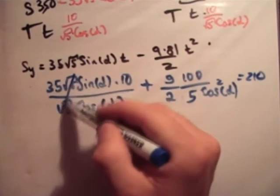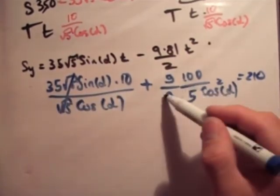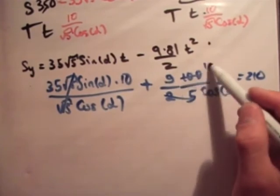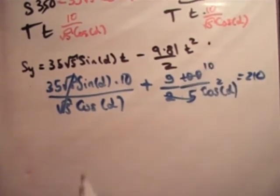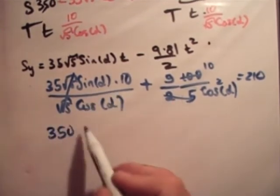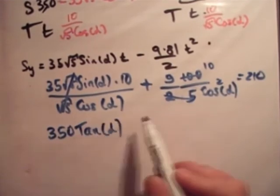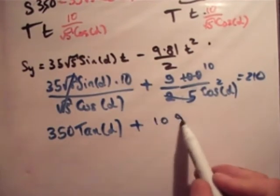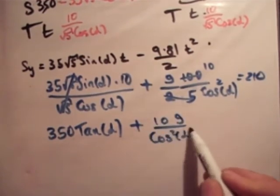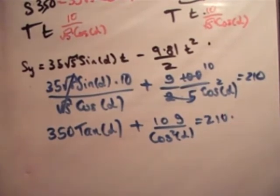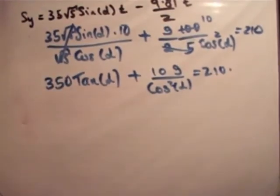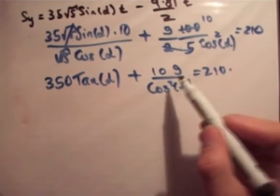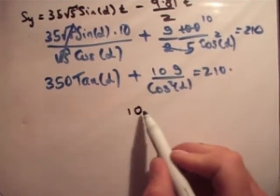So let's cancel what we can. 10 going into 100, 10 times. And you're left with 350·sin(α)/cos(α) - 10g/cos²(α) = 210. Now here, we get more manipulation of the formula. If you can do it, you can do it. If you can't, it's not a big deal.